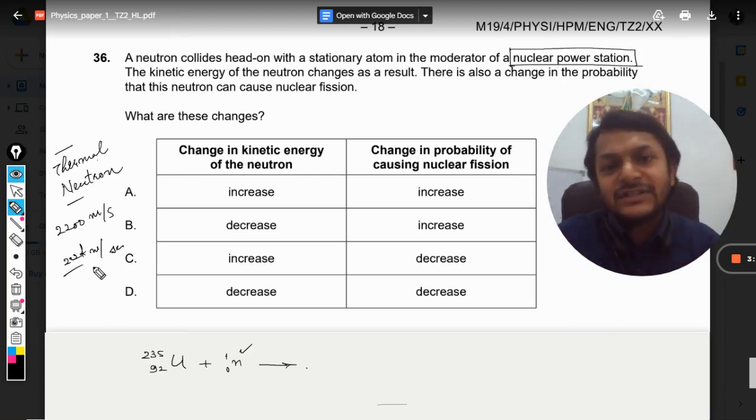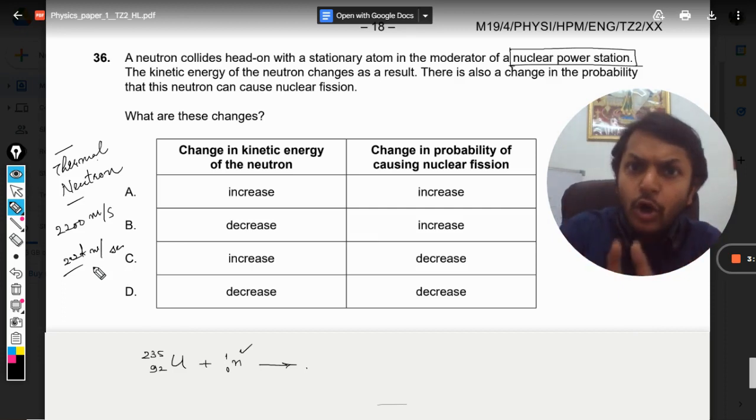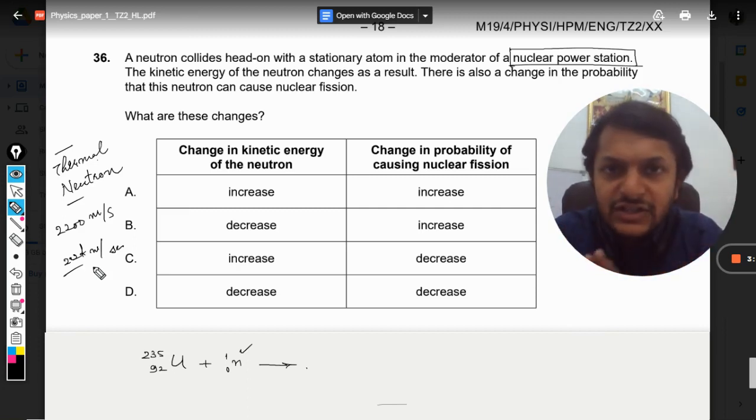But what happens if the neutron is faster? What happens if the neutron is having even higher velocities? Then for example you are trying to catch a ball and the ball is coming at a very high speed towards you and when you try to catch it, the ball rebounds out of your hands. You are not able to catch the ball.